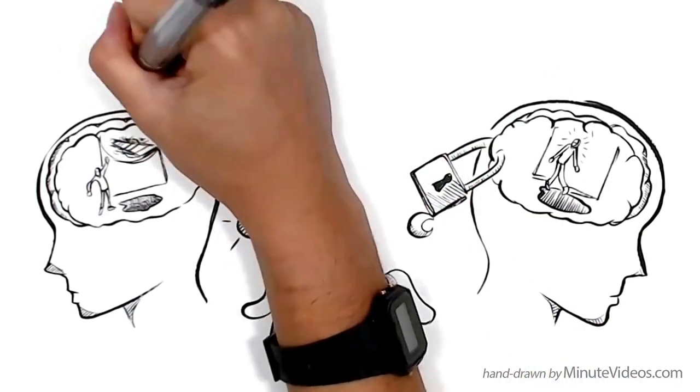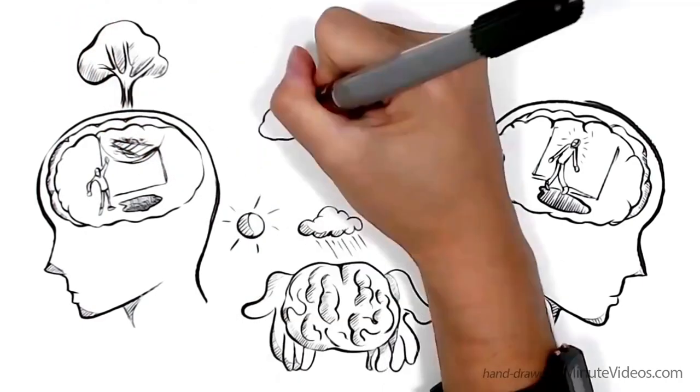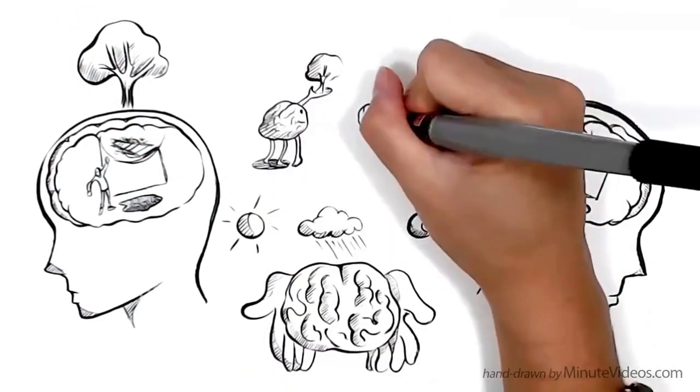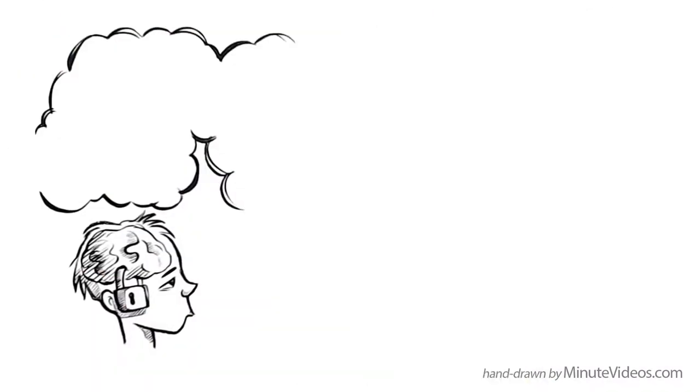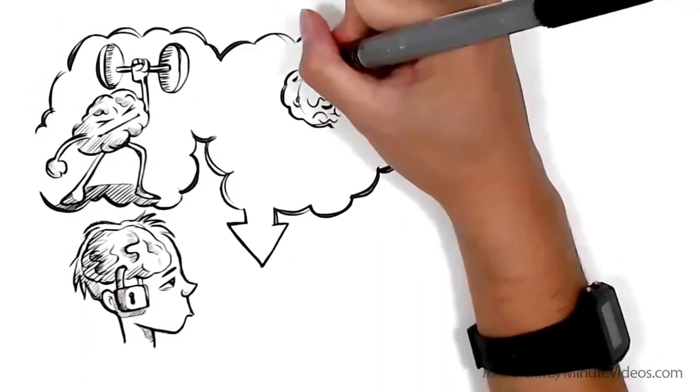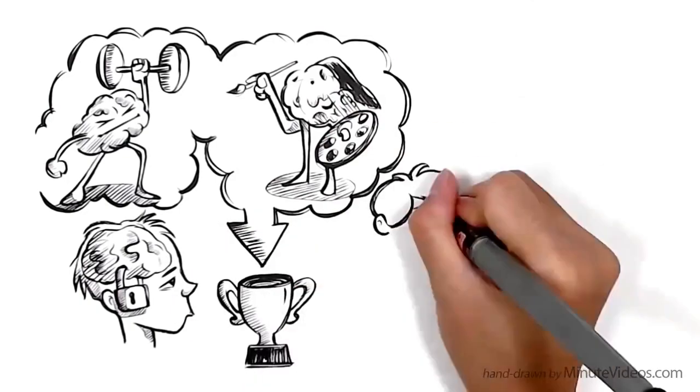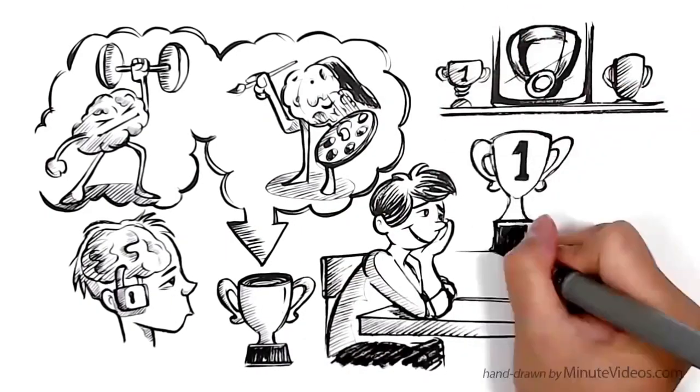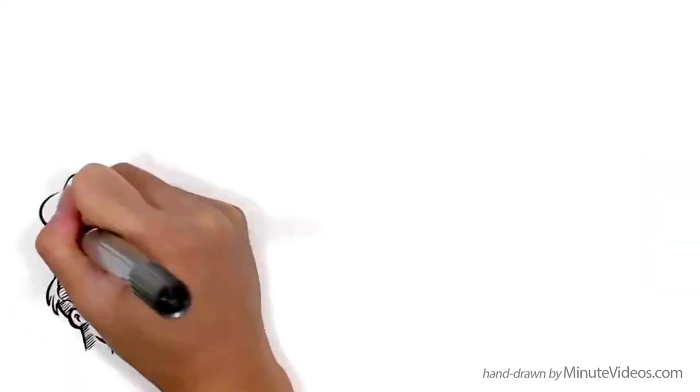Those who see problems as interesting challenges have a growth mindset. Sometimes we like to switch from one to the other. People have a fixed mindset because they believe that basic qualities like intelligence or talents are fixed traits, and that these traits are responsible for success. They often like to document past achievements.